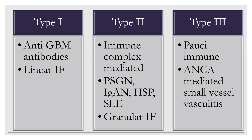RPGN is classified into three types. Type 1 is anti-GBM antibodies, which shows linear immunofluorescence. Type 2 is immune-complex mediated — examples include lupus, post-streptococcal, IgA — and since it's immune-complex mediated you'd have granular immunofluorescence. Type 3 is ANCA-mediated, also called pauci-immune, and involves three kinds of small vessel vasculitis: granulomatosis with polyangiitis, Churg-Strauss, and microscopic polyangiitis.